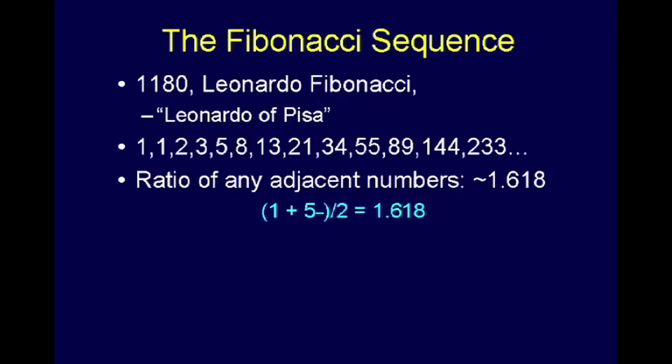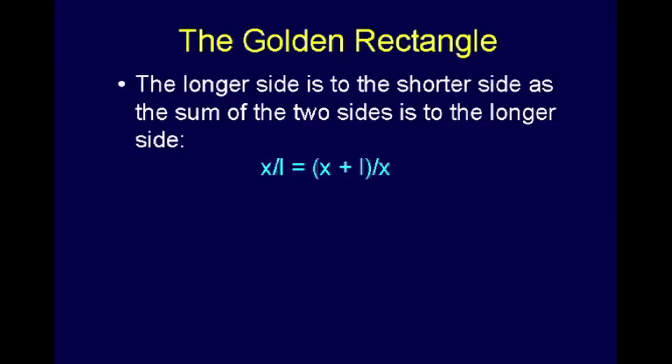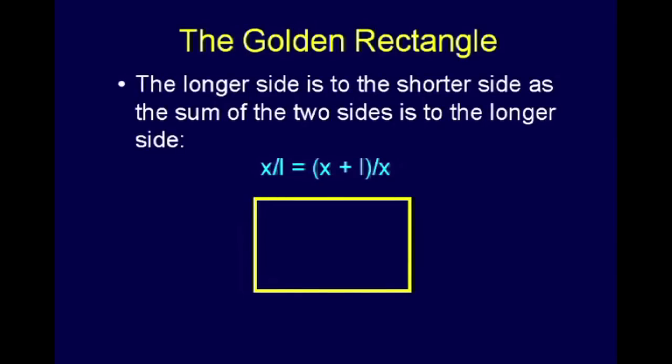Fibonacci first discovered it in the 12th century, but he didn't recognize the real significance. It took several hundred years for people to discover that this sequence appears in nature in some of the strangest places. The ratio of any two adjacent numbers is approximately 1.6 — it varies a little in the second or third decimal place, but it's very close. This shows up in what's sometimes called the golden rectangle. The ancient Greeks discovered that there's a rectangle whose proportions are the most pleasing, and they called it the golden rectangle — that's when the longer side is related to the shorter side as the shorter side is to the sum of the two sides.